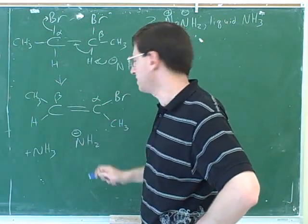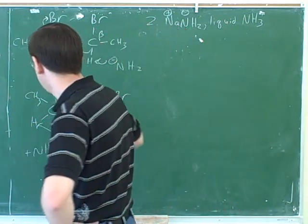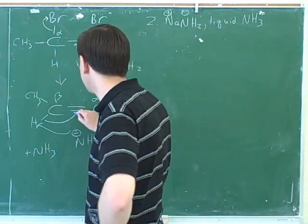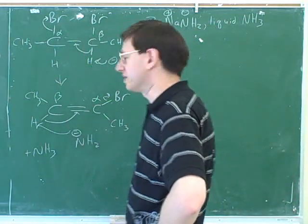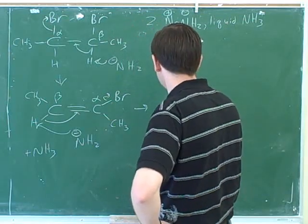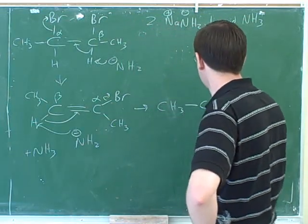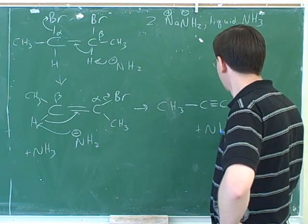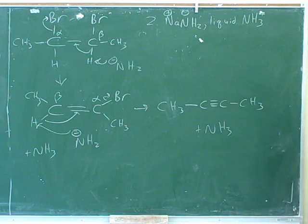So now we're treating this like the alpha carbon and this like the beta carbon. The alpha carbon is the one that's got the leaving group. So then we would come in like this. That frees up these electrons and then we have this leaving group here. And that would give us this product.